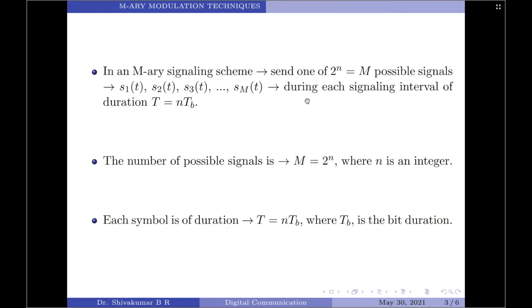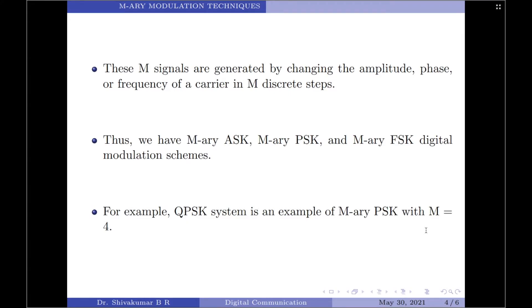From this definition, the total number of possible signals is M = 2^n, where n must be an integer. Each symbol is of duration T = n·Tb, where Tb is the bit duration. Now let us talk about modulation techniques that involve M-ary signaling schemes. Just as we have binary ASK, FSK, and PSK, it is possible to perform M-ary ASK, FSK, and PSK as well.